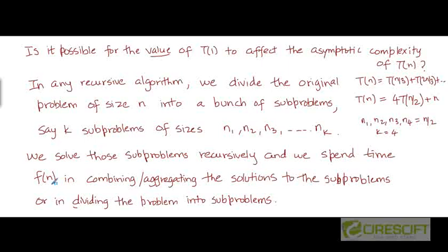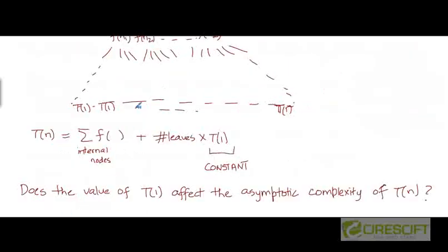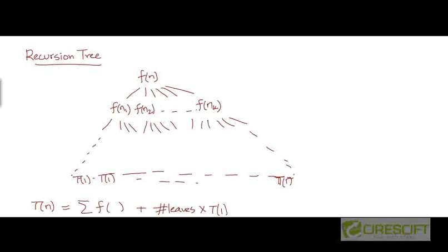In general, f(n) includes not only the time for combining or aggregating solutions to subproblems, as in merge sort, but it could also include the time it takes to divide the problem into subproblems. So for a general recursive algorithm, the recurrence would be of the form: T(n) = T(n1) + T(n2) + ... + T(n_k) + f(n).